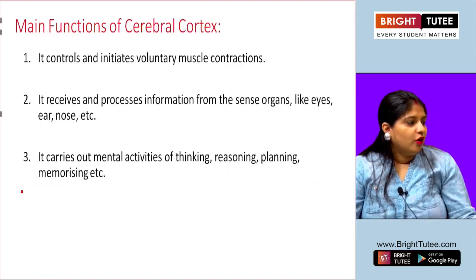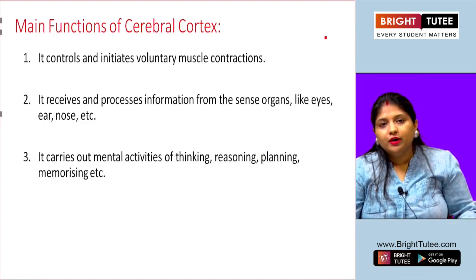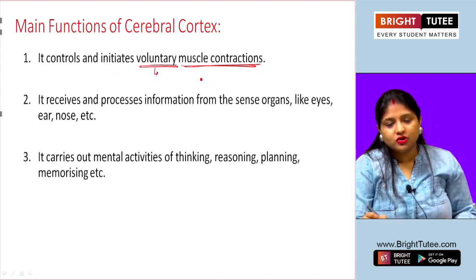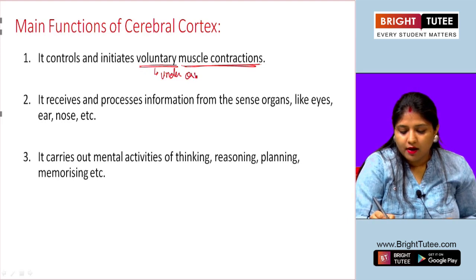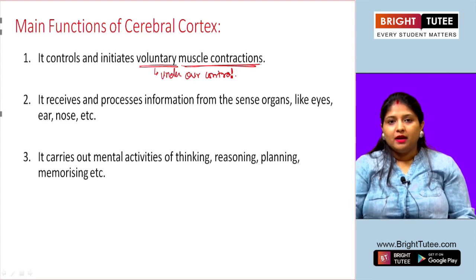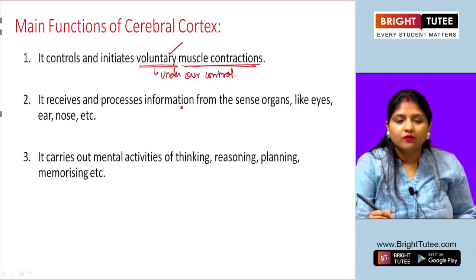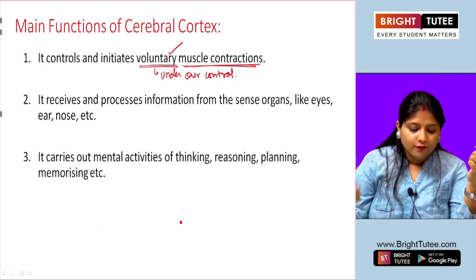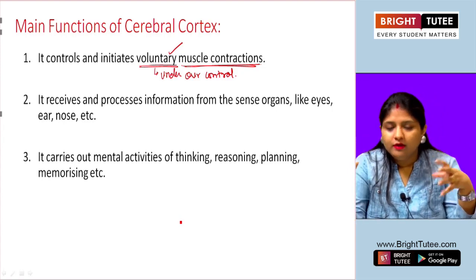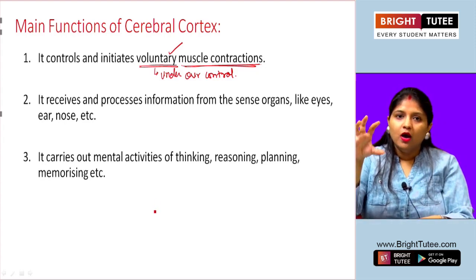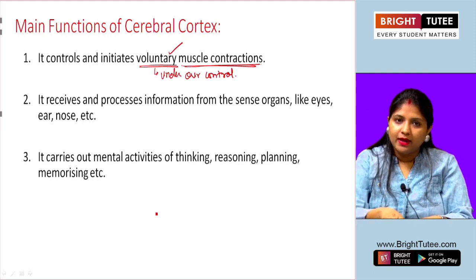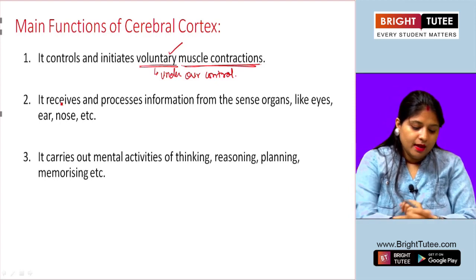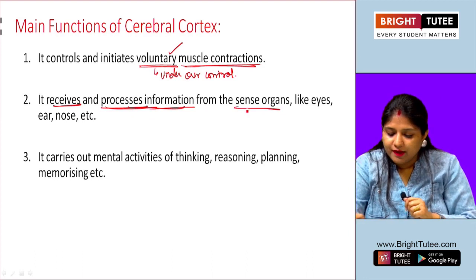The main functions of the cerebral cortex are: first, it controls and initiates voluntary muscle contractions — actions under our control, such as deciding to pick up a pen, making a grip, and holding it. Second, it receives and processes information from sense organs like the eyes, ears, and nose.